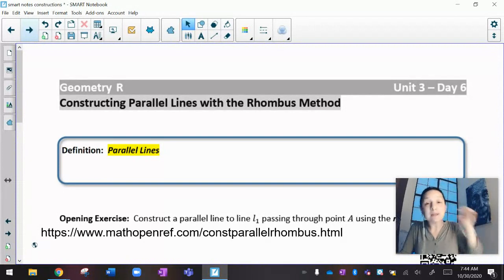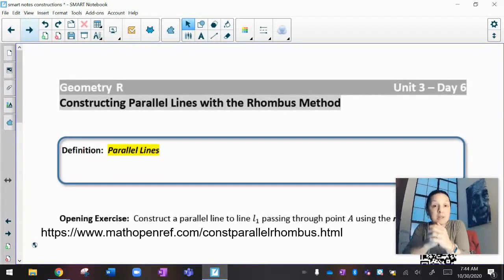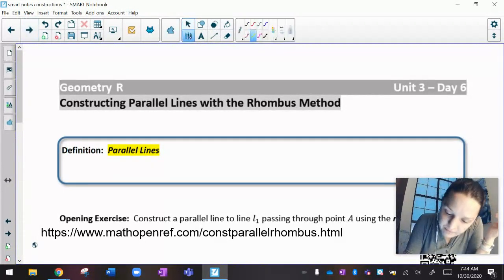We're going to keep going. So we're going to go on to day six. Day five was about making more perpendiculars, perpendiculars from a point on the line, perpendiculars from a point not on the line. Now we're going to start talking about what if you don't want to be perpendicular and instead you want to be parallel.